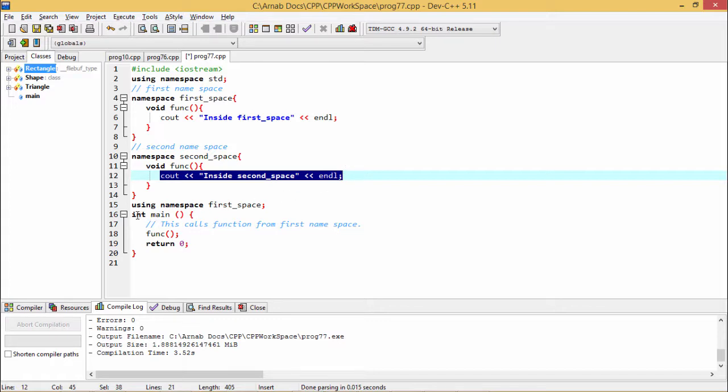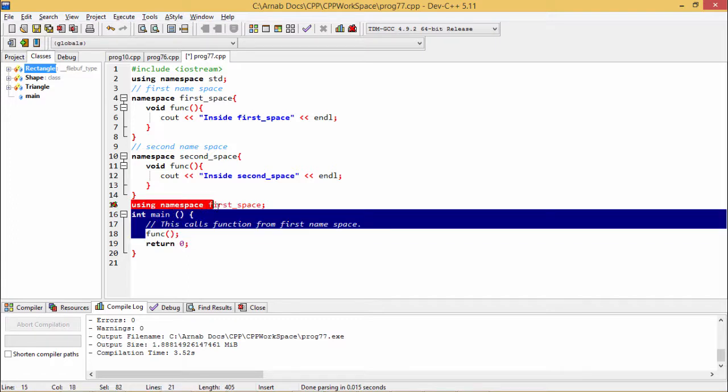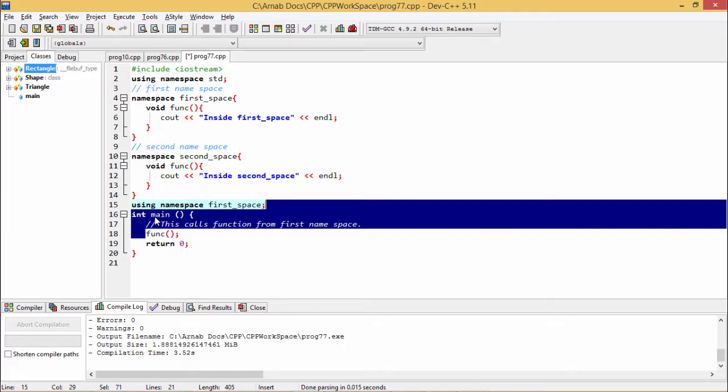Now int main from the main function, I am calling this func FUNC. This particular function has been called, but if we use this namespace first space before this particular main the function body...